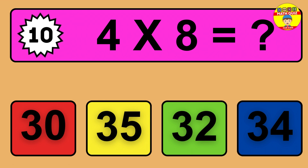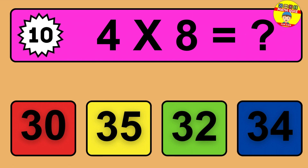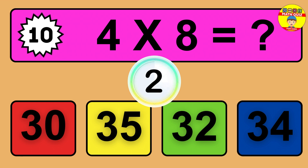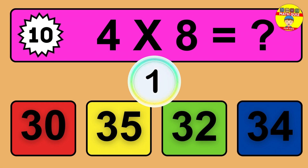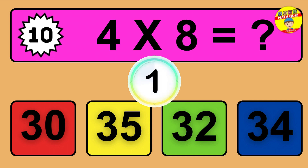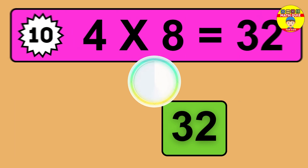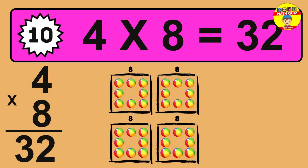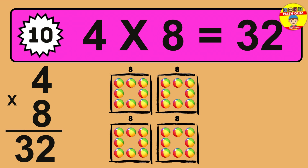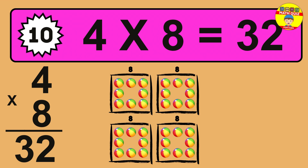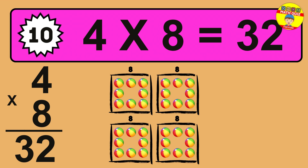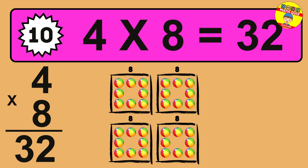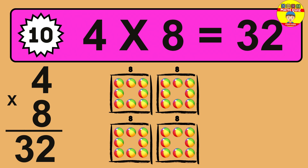Question 10. 4 times 8 equals what? The answer is 4 times 8 is 32. To calculate, we have 4 groups with 8 balls each one. So how many balls do we have? 32 balls.